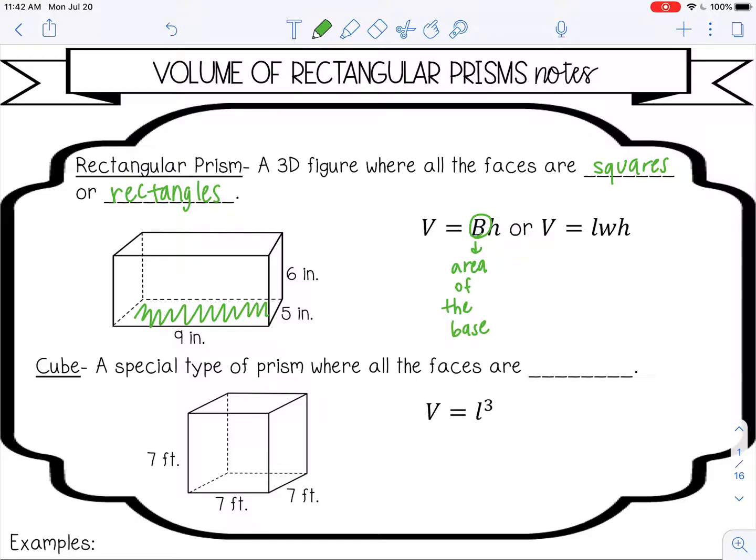And the base is just the bottom. It depends on the way the rectangular prism is facing, but it's easiest to just say it's the bottom or one of the faces. And then the height is, of course, how tall the prism is. And then the other formula you may see is volume equals length times width times height, which is really the same thing as base times height because length times width is how you would find the area of the base.